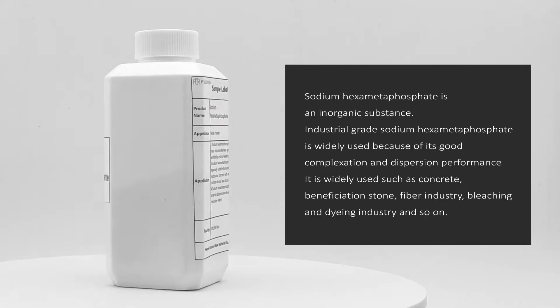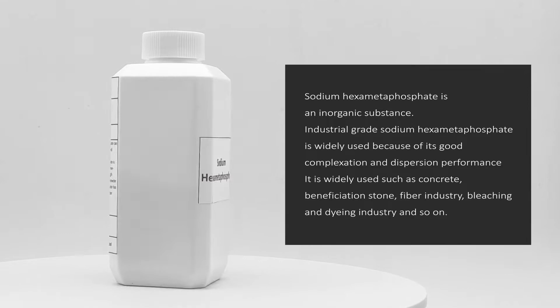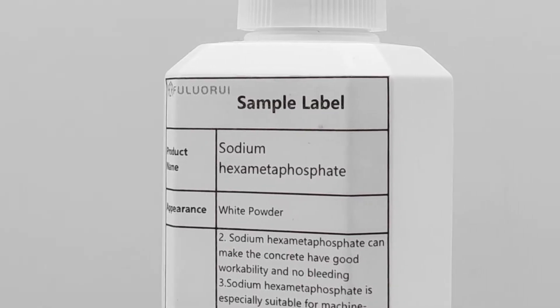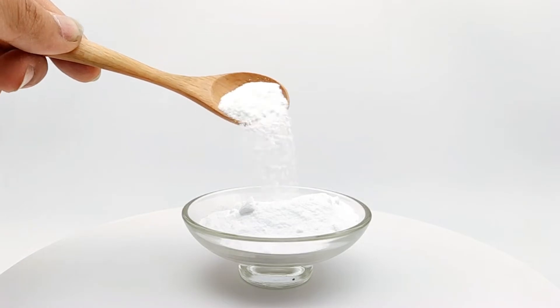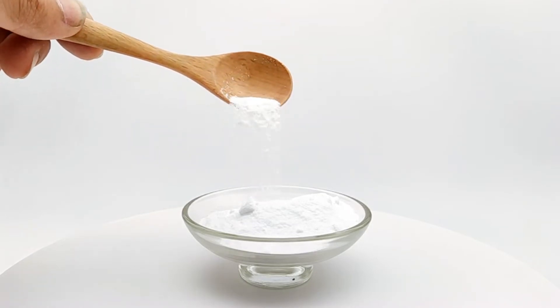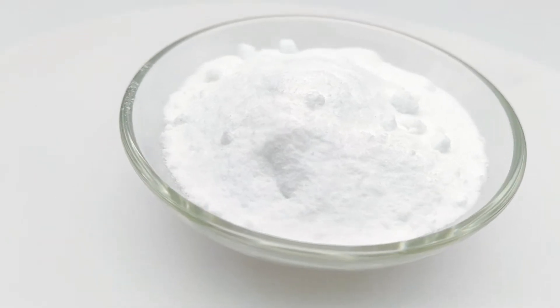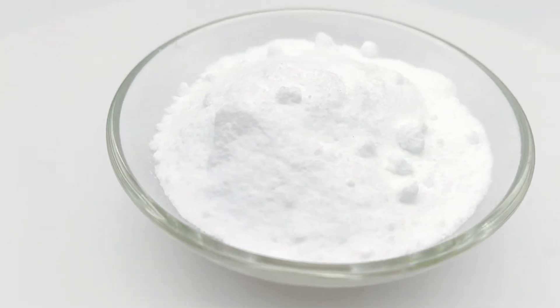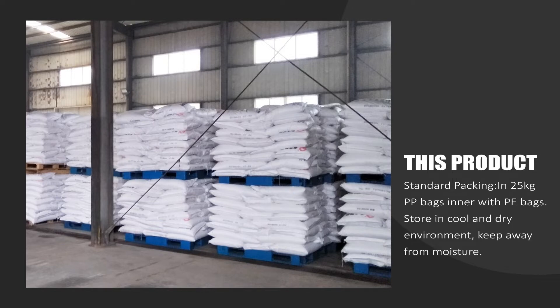Sodium hexametaphosphate is an inorganic substance. Industrial-grade sodium hexametaphosphate is widely used because of its good complexation and dispersion performance. It is widely used in concrete, beneficiation, stone fiber industry, bleaching and dyeing industry, and so on. Standard packing is in 25-kilogram PP bags, inner with PE bags. Store in a cool and dry environment, keep away from moisture.